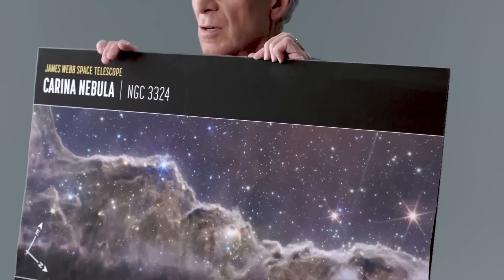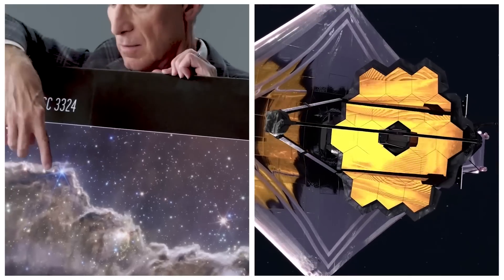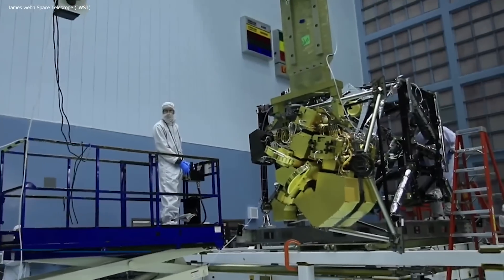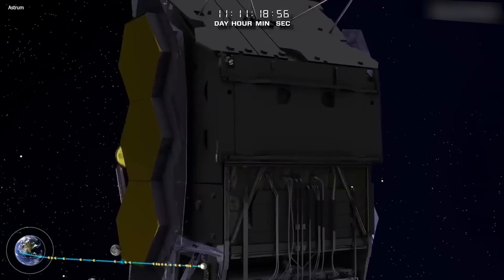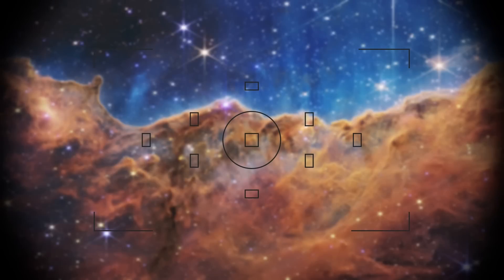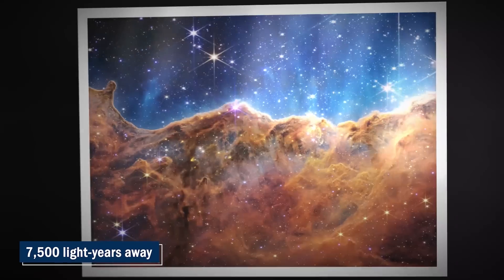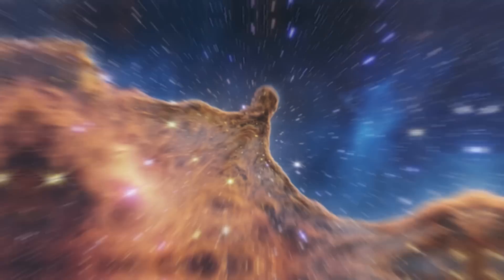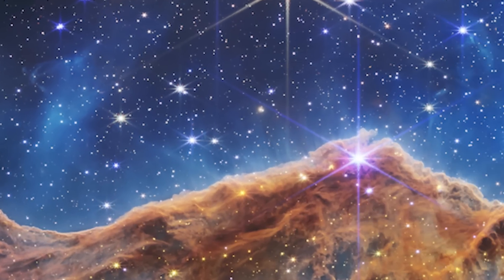Bill Nye breaks down the beautiful Carina Nebula image from the JWST. Captured by the Near Infrared Camera or NIR Cam aboard the James Webb Space Telescope, this nebula is located about 7,500 light years away from Earth and is known as the Cosmic Cliffs.